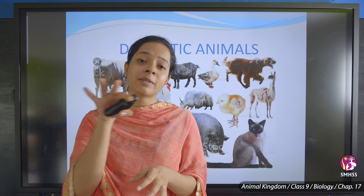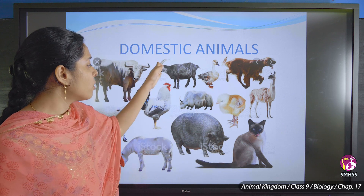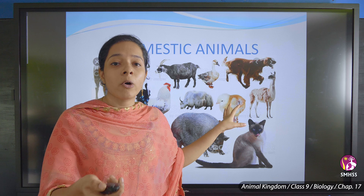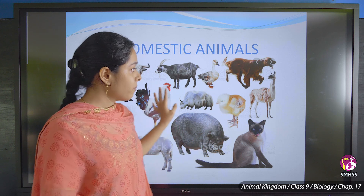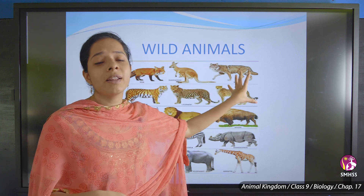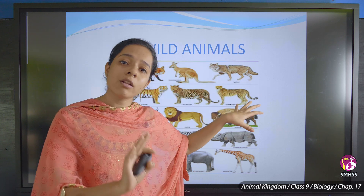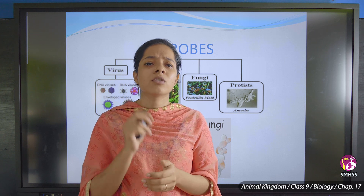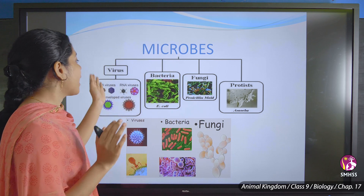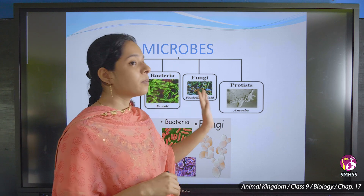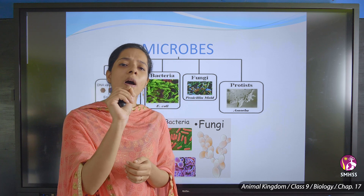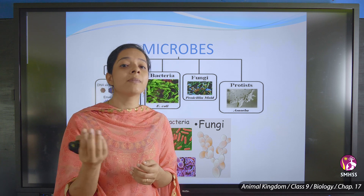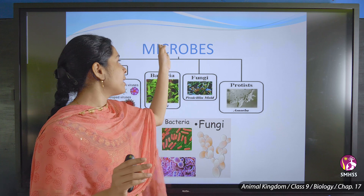Animals present in our surroundings include cat, goat, hen, cow, and dog. Wild animals can only be seen in forests. There are also types of fish species and microorganisms — virus, bacteria, fungi, and protists — which are minute organisms invisible to our eyes.